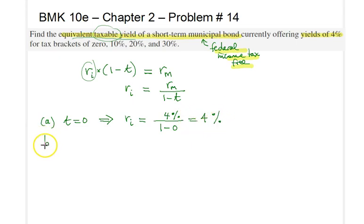So in the second part here, we have that the tax bracket is 10%. In that case, r sub I is simply equal to 4% divided by 1 minus 10%. Let's just write it as a decimal here, so therefore the answer would be 4% divided by 0.90, and it comes out as 4.44%.